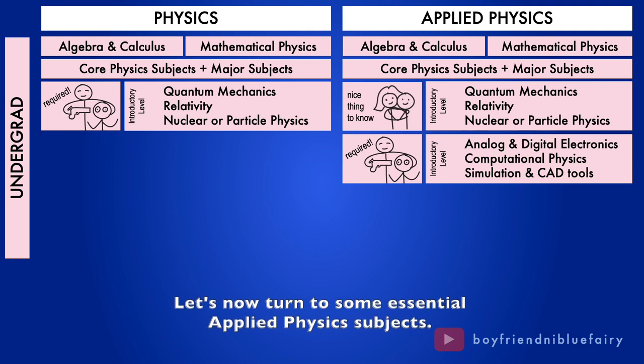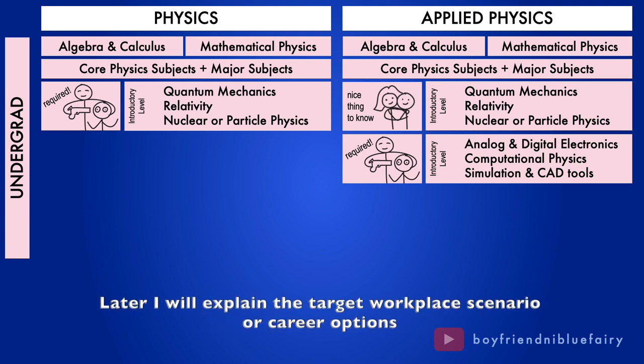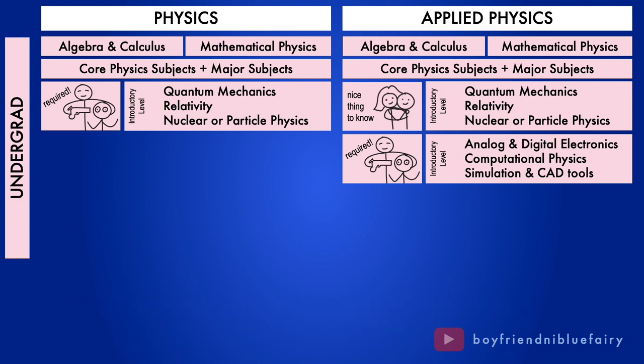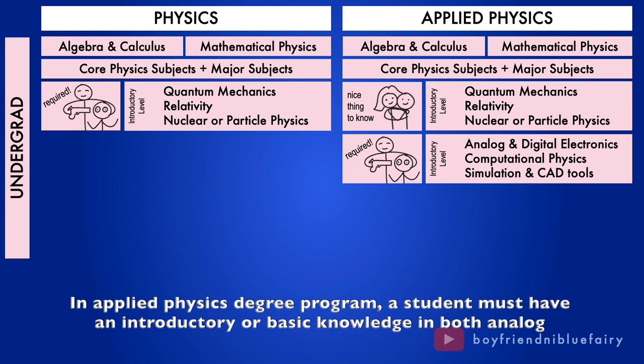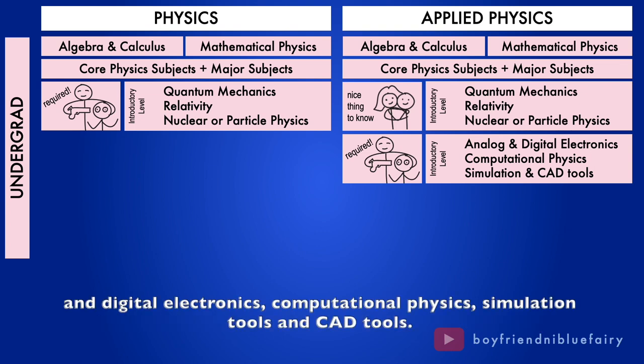It is within the discretion of the director or institute or thesis advisor if students need separate treatment of such subjects. Let's now turn to some essential applied physics subjects. Later, I will explain the target workplace scenario or career options and how the demands in these areas shape or dictate the applied physics subjects offered in a university. In applied physics degree program, a student must have an introductory or basic knowledge in both analog and digital electronics, computational physics, simulation tools, and computer-aided design tools or CAD tools.